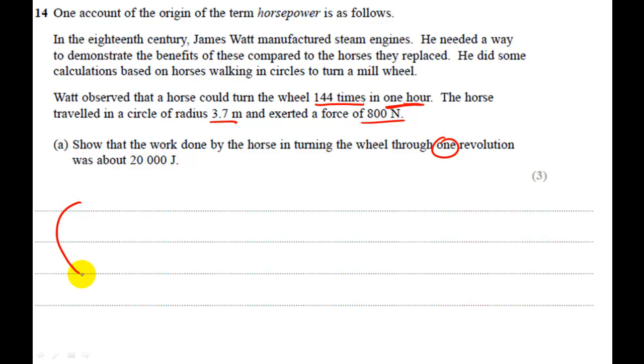So you've got a horse going around in a circle. It's got a radius of 3.7 meters. And it's applying a force of 800 Newtons. Okay, so this is the distance to which the horse is traveling. This is the distance to which it's applying this force of 800 Newtons.